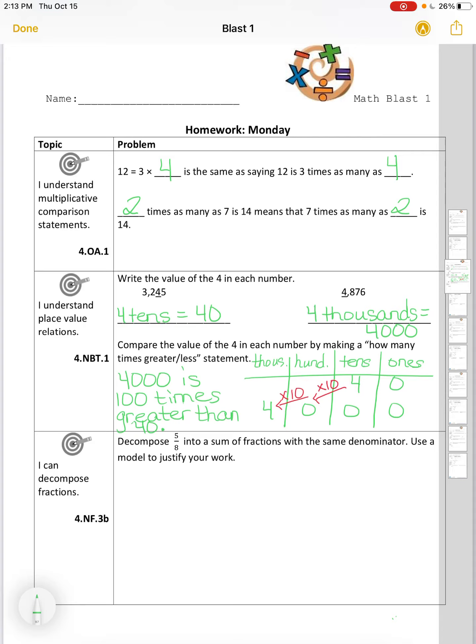I can decompose fractions. Decompose 5 eighths into a sum of fractions with the same denominator. Use a model to justify your work. So I'm going to start with 5 eighths. And I'm going to use a number bond here. 5 eighths is my total. And to decompose means to break down, to break apart.